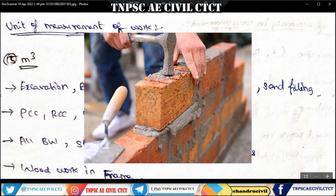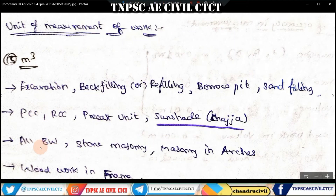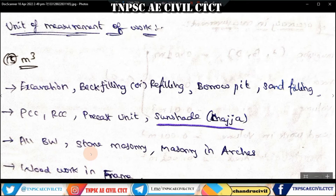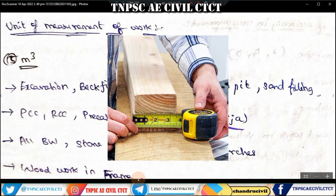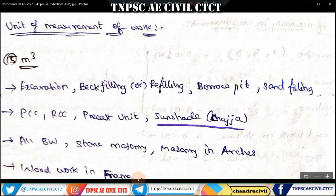Next, the difference is for brick. All brick masonry work uses meter cube. Some brick work will go to meter square. Stone masonry will be meter cube. Arches will use masonry work in meter cube. Woodwork in frames — woodworks will be measured in meter cube.